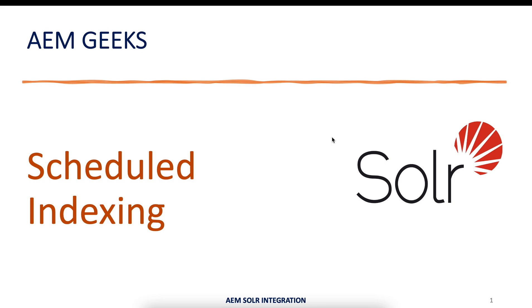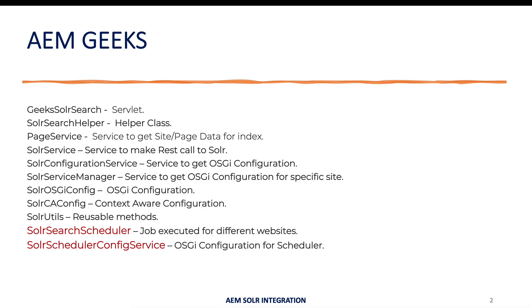In previous tutorials I have already explained indexing, delete and search. Those were manually triggered options. Now if I want these operations to be scheduled at a particular time, I will write a scheduler. As part of this tutorial we will write a scheduler, but more importantly we will talk about jobs. You will learn the practical implementation of jobs, a concept I have already explained in the scheduler tutorials. Let's understand the scenario to understand jobs.